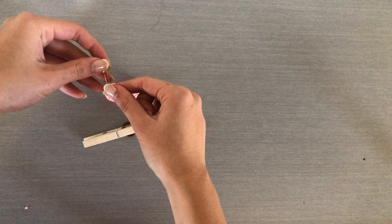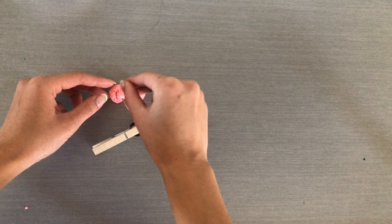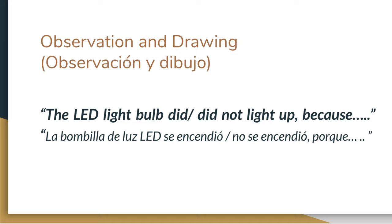If it doesn't light up, try switching the LED light around. After playing with it, you might notice that the LED light has two different lengths of legs, and that the longer leg needs to be connected to the top of the coin battery and the shorter leg needs to be connected to the bottom of the coin battery for the light to light up. In your observation section of your notebook, write down if your LED light bulb was able to light up and any adjustments you made.